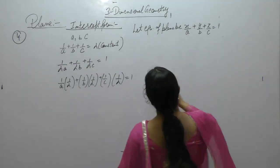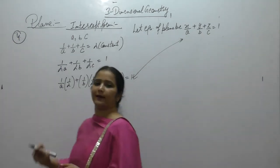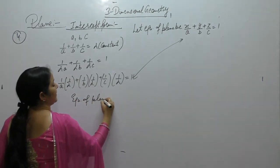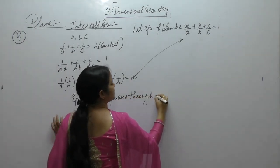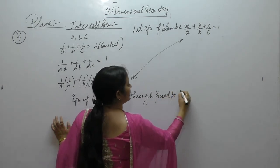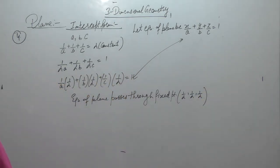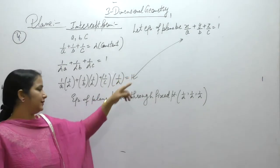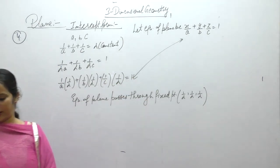Comparing this with the plane equation X/A + Y/B + Z/C = 1, we see that X, Y, and Z all have the value 1/λ. This means the equation of the plane passes through the fixed point (1/λ, 1/λ, 1/λ). Therefore, the equation of the plane passes through the fixed point (1/λ, 1/λ, 1/λ).